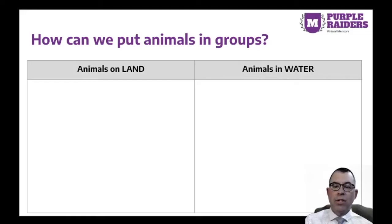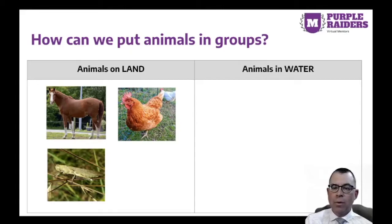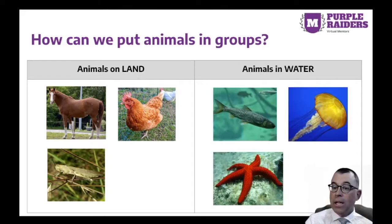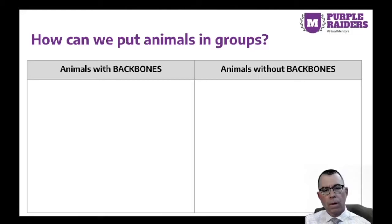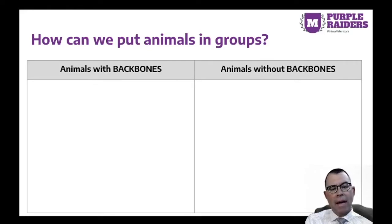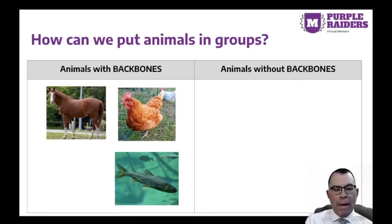You might have thought about making two groups for the animals. First, animals that live on land. The second group might be animals that live in water. Can you think of a different way to group these same animals? Look how our groups change if we sort them as animals with backbones, and animals without backbones.